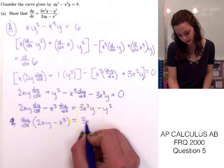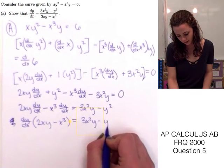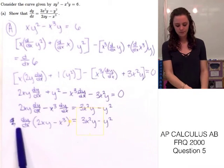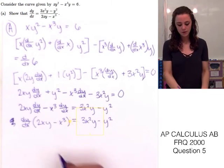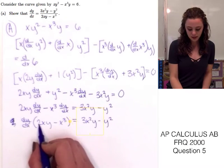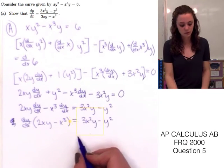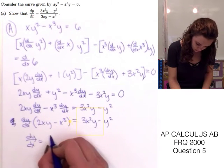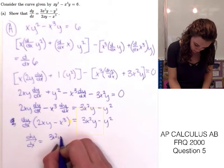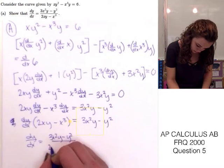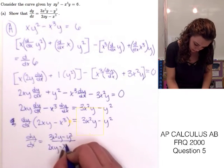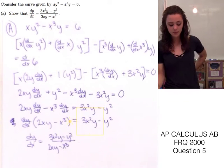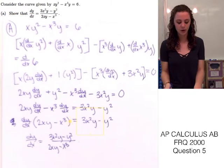We get dy/dx times (2xy minus x³) equals 3x²y minus y². Now we just divide both sides by (2xy minus x³), and we end up with dy/dx equals 3x²y minus y² all over 2xy minus x³. That matches what's on the paper, so that's how you solve Part A.